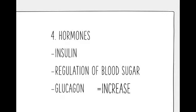The fourth one: hormones. Insulin regulation of blood sugar — hormones of the pancreas. The main hormones of the pancreas that affect blood glucose include insulin, glucagon, somatostatin, and amylin.